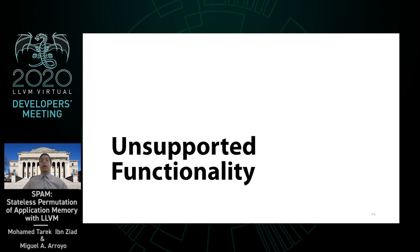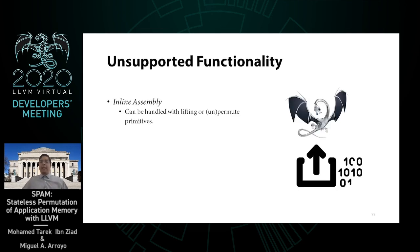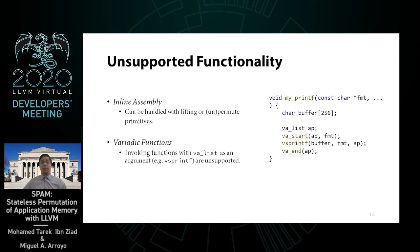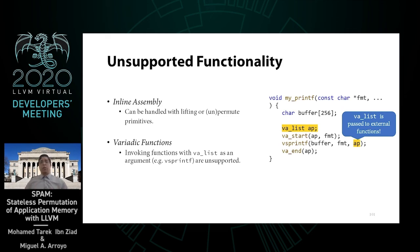Finally, let's look at some unsupported functionality in our current prototype and how we plan to address them. SPAM is still not able to properly instrument inline assembly code; however, in the future we anticipate supporting inline assembly with the integration of a lifter. Variadic functions are fully supported in our current prototype, with the only exception being the invocation of external functions that use VAList as an argument — think of the vsnprintf function as an example. Passing VAList to external functions is not currently supported, but using VAList inside instrumented code is fully supported.